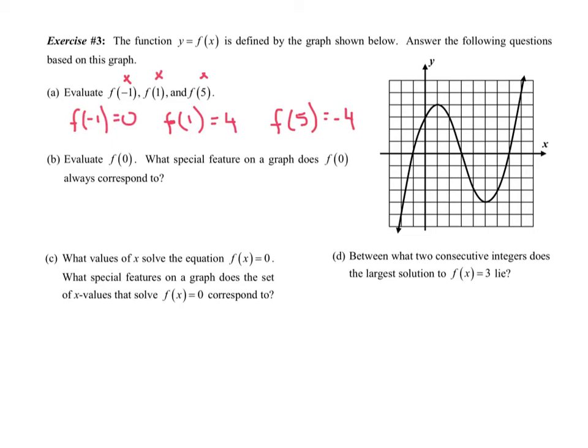All right, part b. So we can check off part a, part b here. Evaluate f of 0. So same thing here. When x is 0, go up until you hit the graph. And we've got a corresponding y-coordinate of 3. So I'm going to say f of 0 equals 3. And then they want to know what special feature of the graph does f of 0 correspond to. You'll notice that moment right there is something really special. That is your y-intercept. In other words, to kind of summarize that, that any time your x value is 0, any time your input is 0, you're automatically finding the y-intercept every single time.